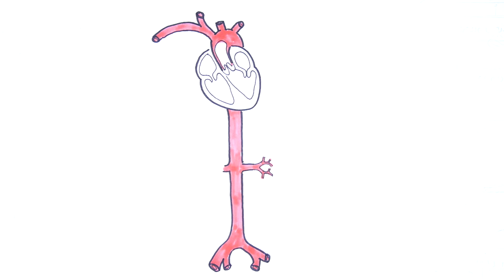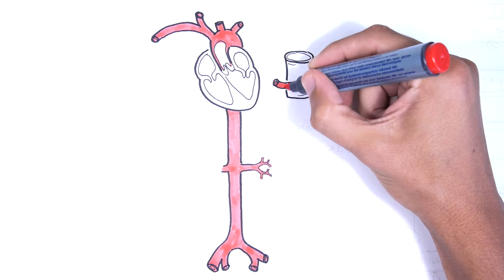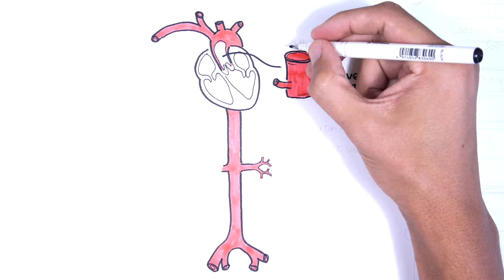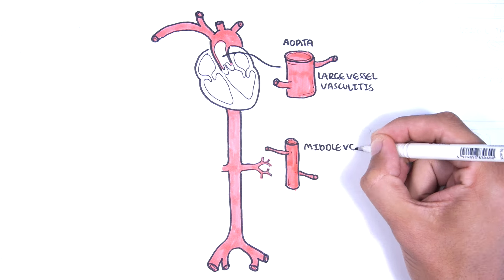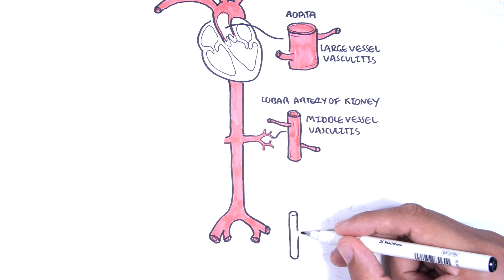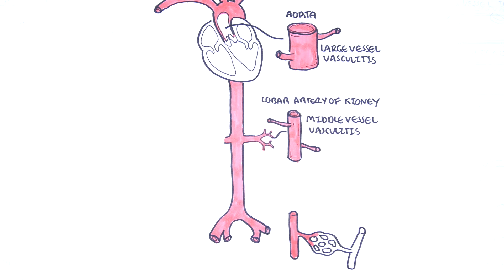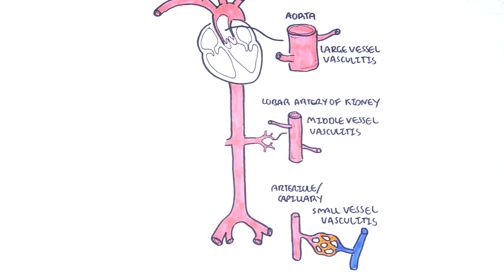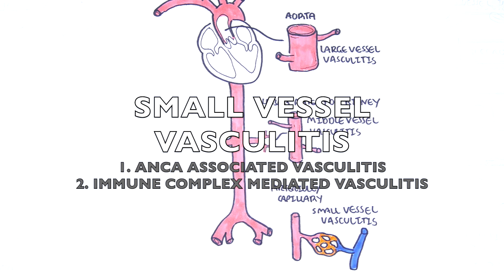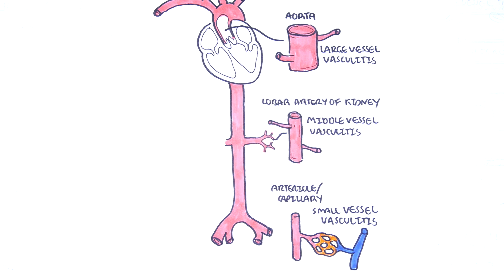Primary vasculitides are classified into the size of the blood vessel affected: large vessel vasculitis, medium vessel vasculitis, and small vessel vasculitis. Small vessel vasculitis typically affects the small arterioles and the capillaries, and can be further divided into ANCA-associated vasculitis and immune-complex mediated vasculitis.